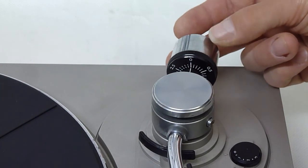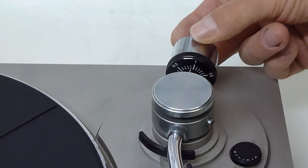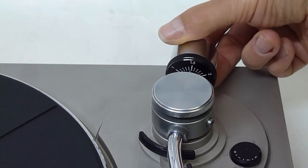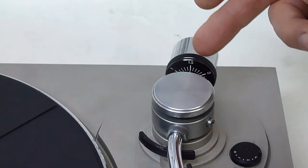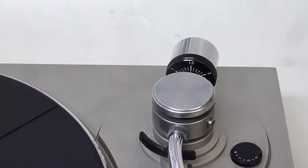Then we turn the weight forward till we get to the desired tracking weight. In this case we're going to 1.5 grams and by turning the weight forwards that puts a weight of 1.5 grams on the stylus tip onto the record.